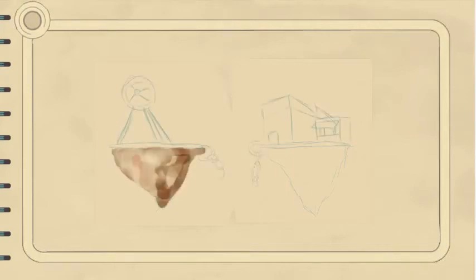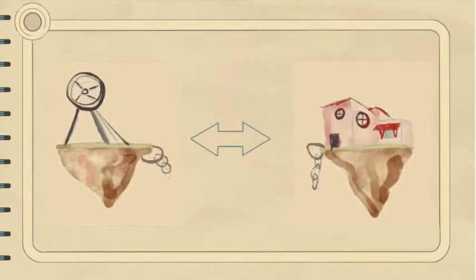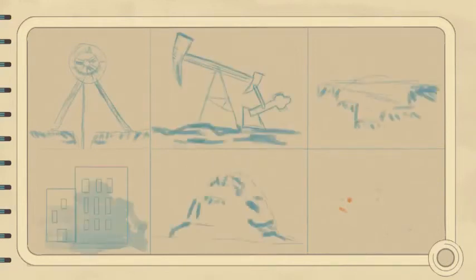In ecological economics, decoupling refers to the separation of economic value creation from extraction and pollution. There isn't one measure of decoupling but rather different measures for different types of extraction or pollution.